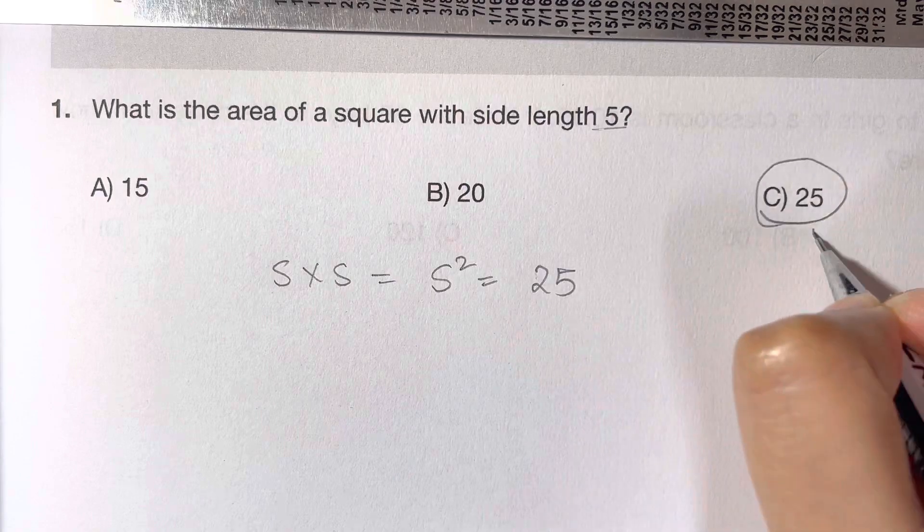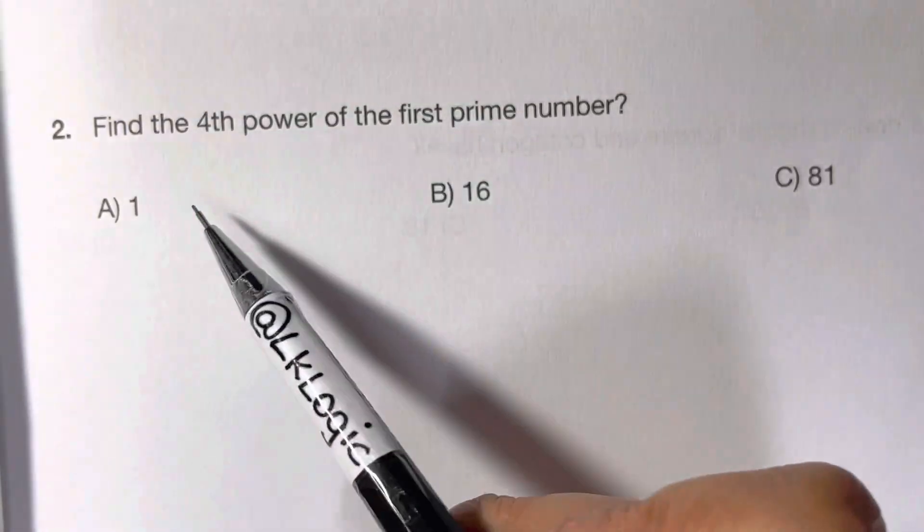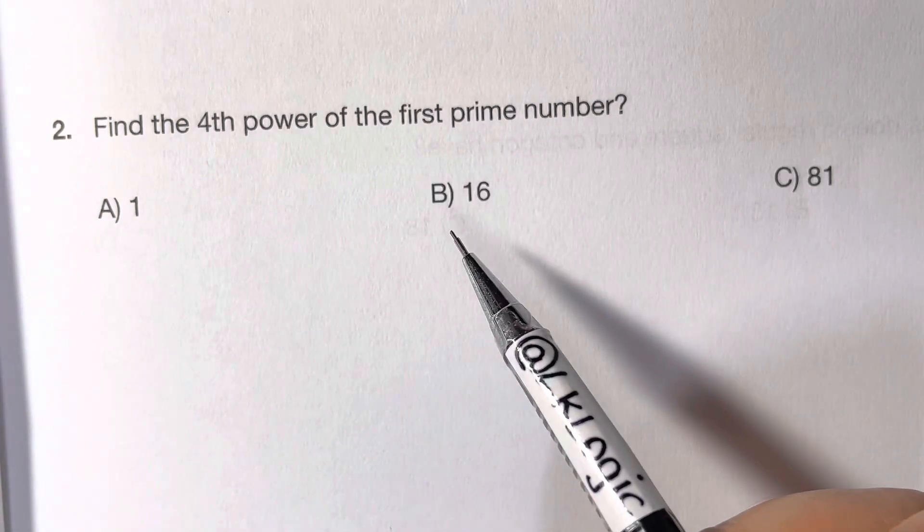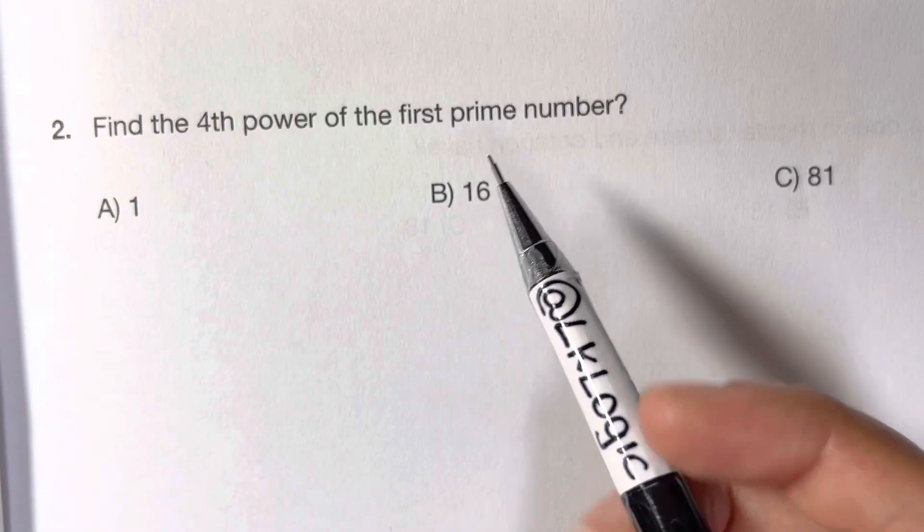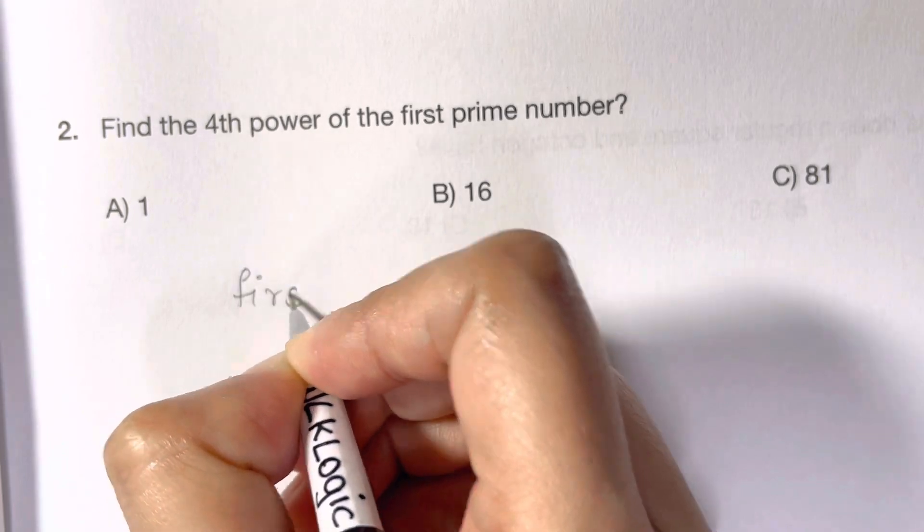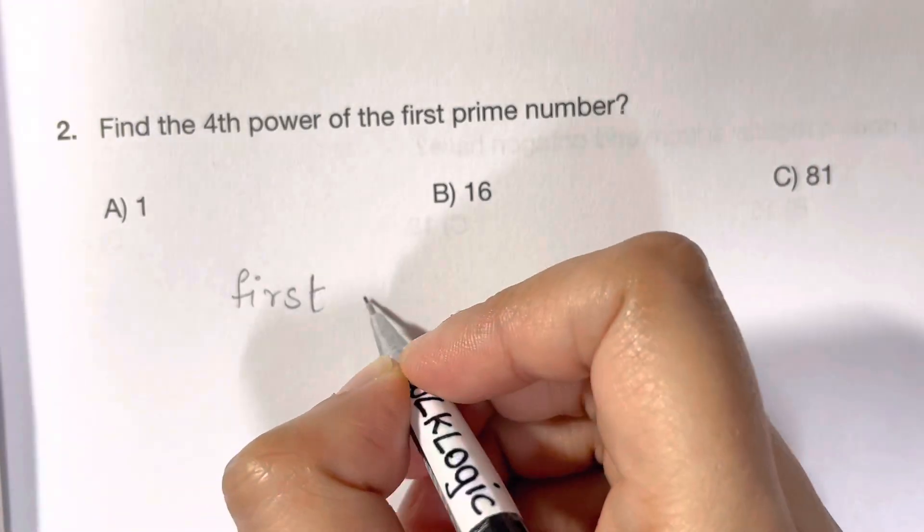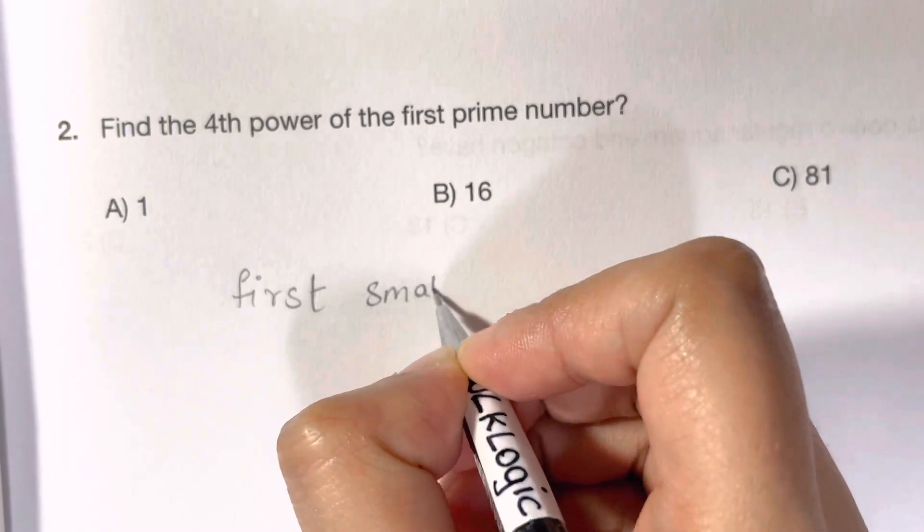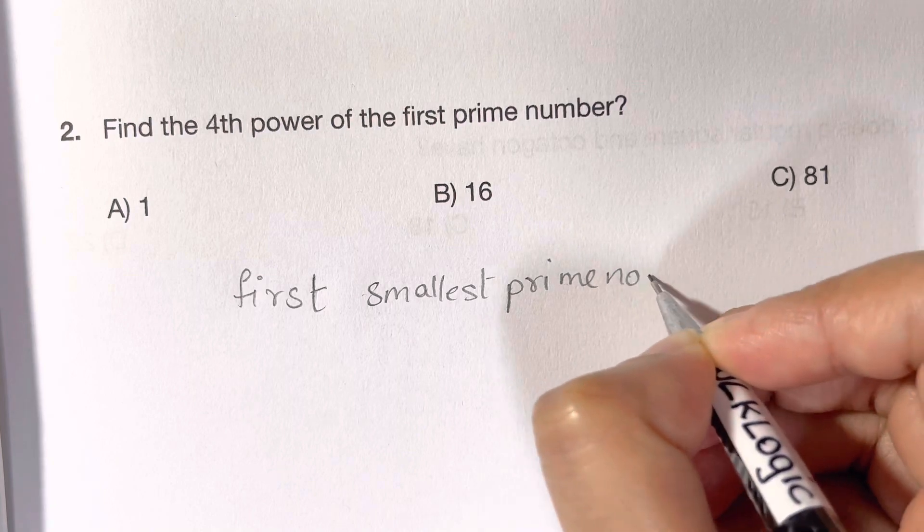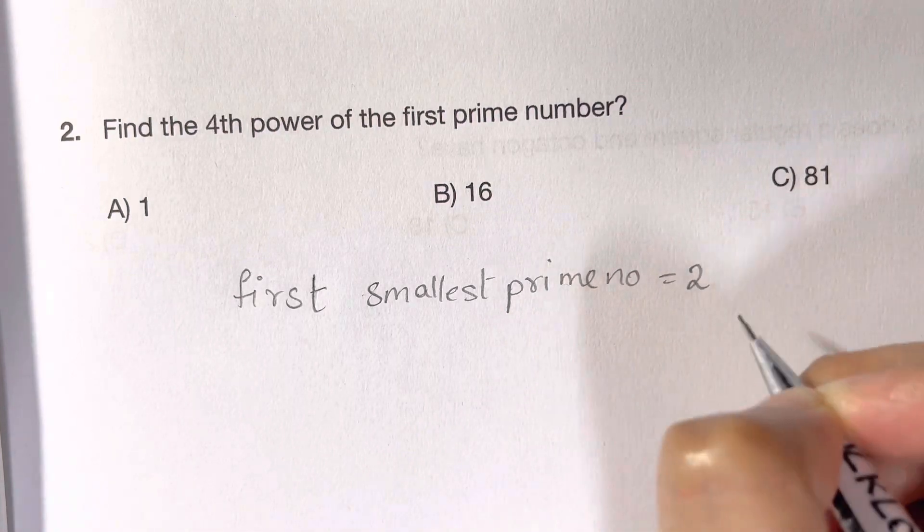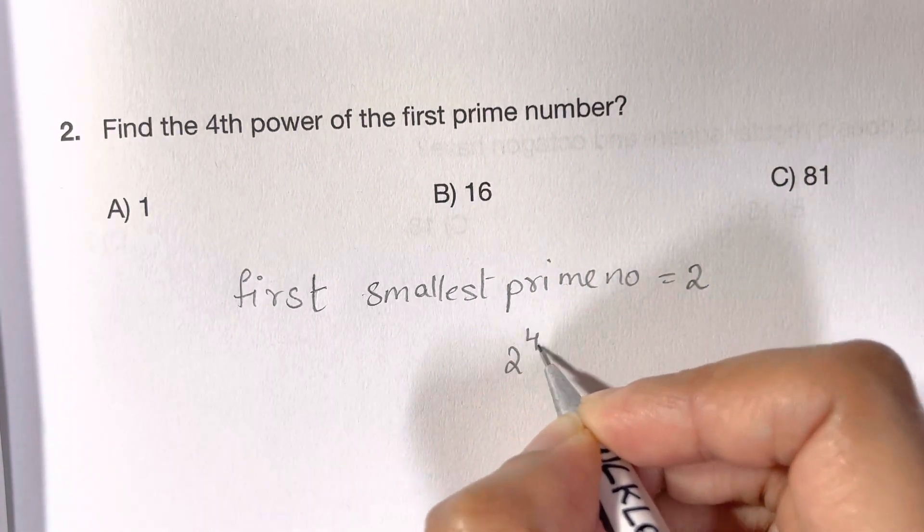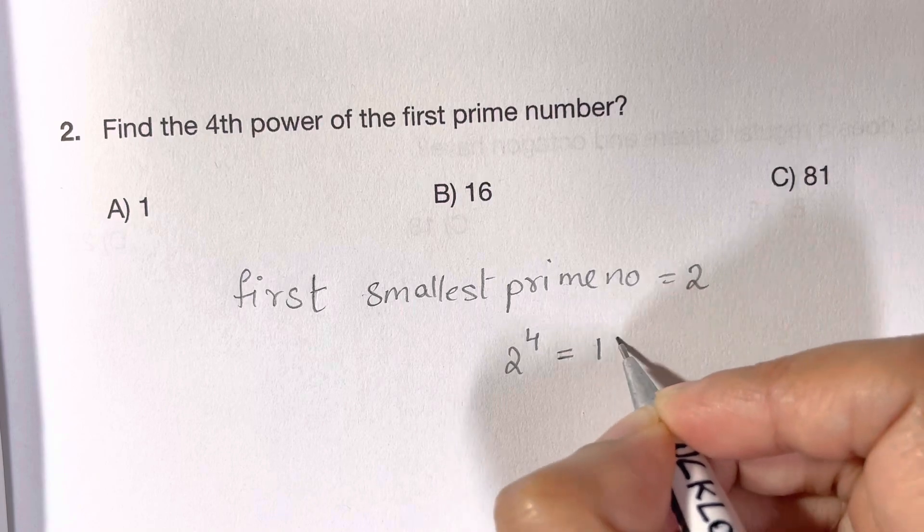Question number 2 says find the fourth power of the first prime number. So first of all, we should know what is the first smallest prime number. The first smallest prime number is 2, and fourth power of 2, that is 2 to the power of 4, will give you 16. That's your answer, choice B.